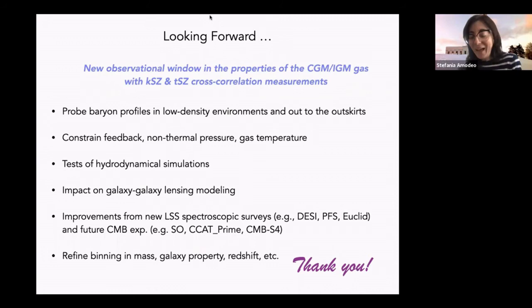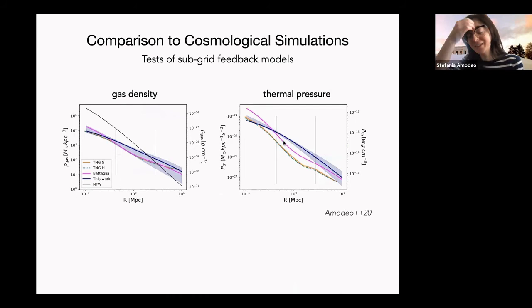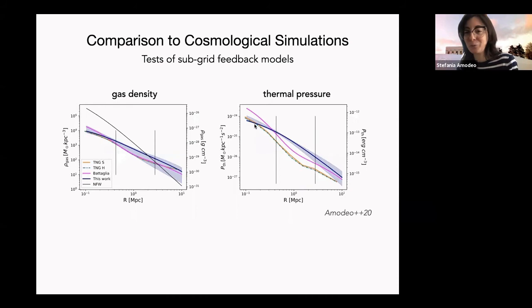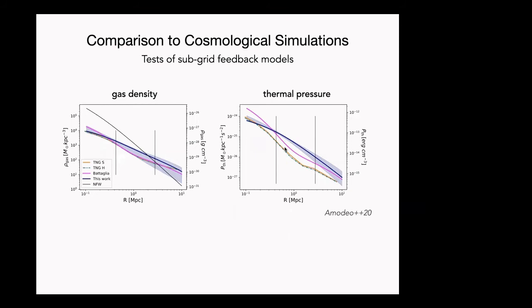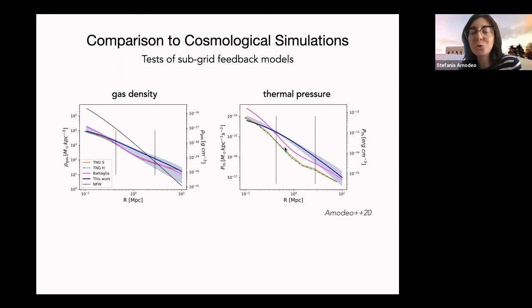We have included the Planck pressure profile (from Planck 2013) in the updated version of the paper, and it similarly underpredicts the thermal pressure, consistent with the other simulation curves. So even the best-fit universal pressure profile from Planck data does not reproduce our observed pressure at the scales we probe.